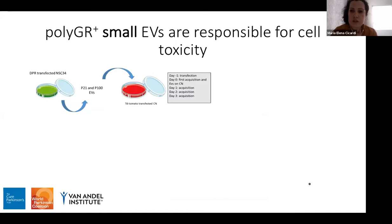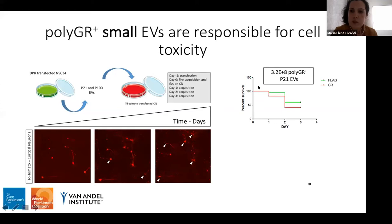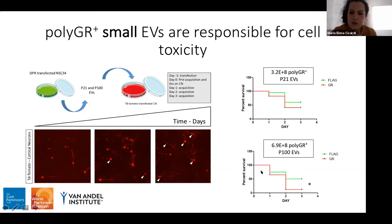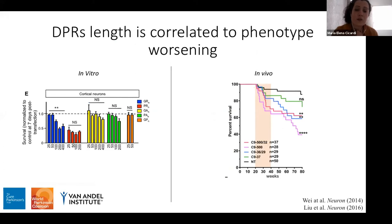Treating NSC34 cells with GW4869 rescued the decreased viability of cortical neurons that were in contact with GR-transfected cells, leading to the conclusion that the observed toxicity was linked to EV production. To identify which EV population mediates this toxicity, we isolated P21 and P100 EVs from GR-transfected NSC34 cells and directly treated cortical neurons. P21 EVs positive for GR did not cause dramatic viability reduction, but P100 small EVs positive for GR recapitulated the same level of toxicity, identifying small EVs as the main effector.